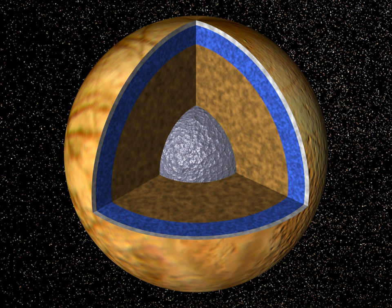Outside the solar system, Kepler-11, GJ-1214b, Kepler-22b, Kepler-62f, Kepler-62e, and the planets of TRAPPIST-1 are some of the most likely known candidates for an extrasolar ocean planet. Many more such objects are expected to be discovered by Kepler.